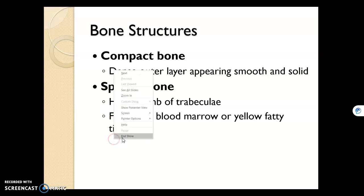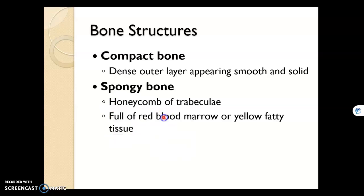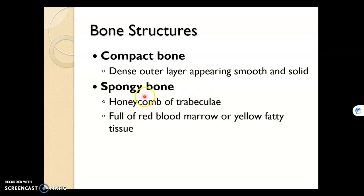Bone can be compact or spongy. Compact bone is dense, and you'll see that in the outer layer. So when you're looking at a skeleton, all you see is compact bone. But within that bone, bone will get spongy or honeycomb-like.